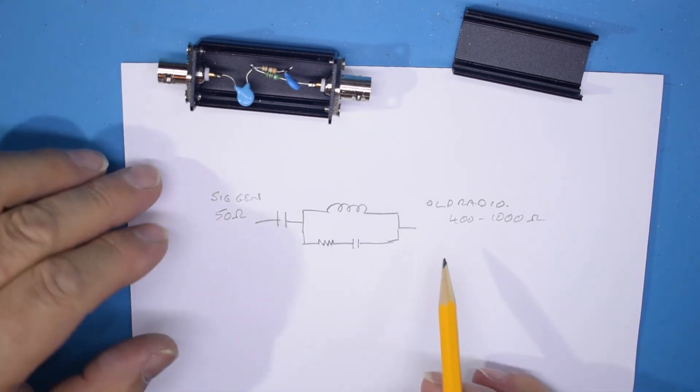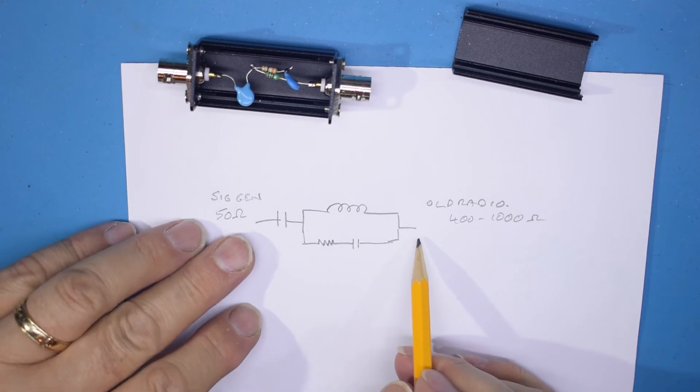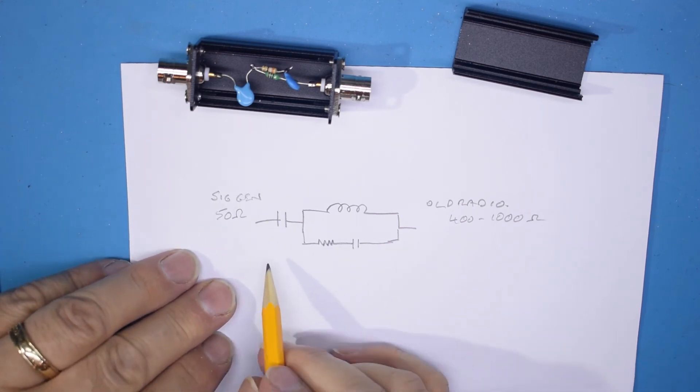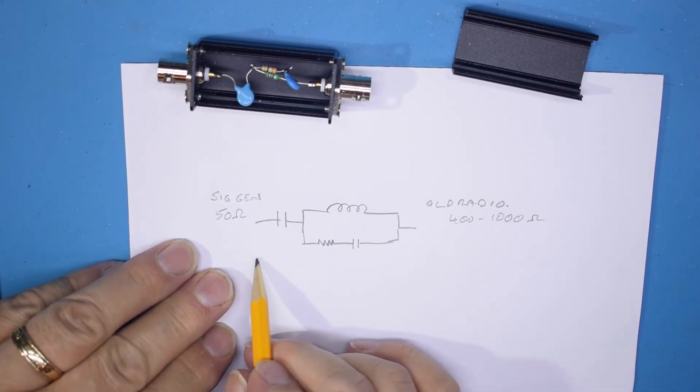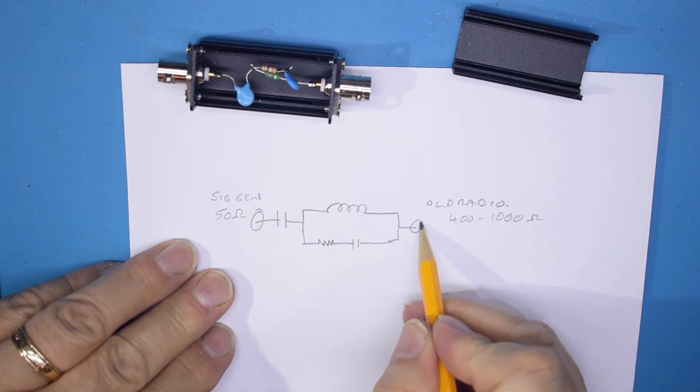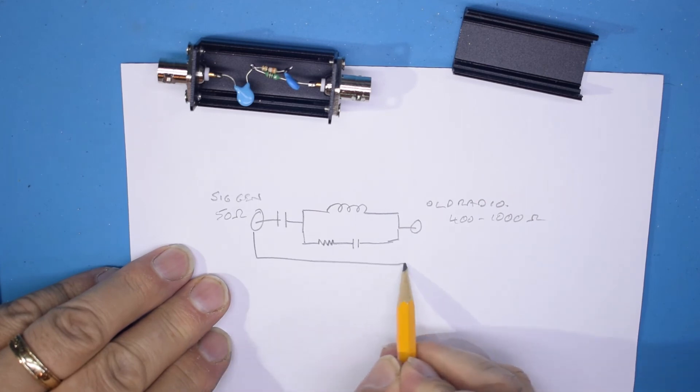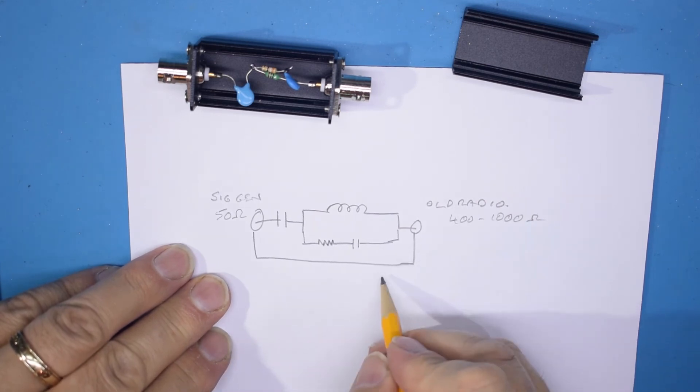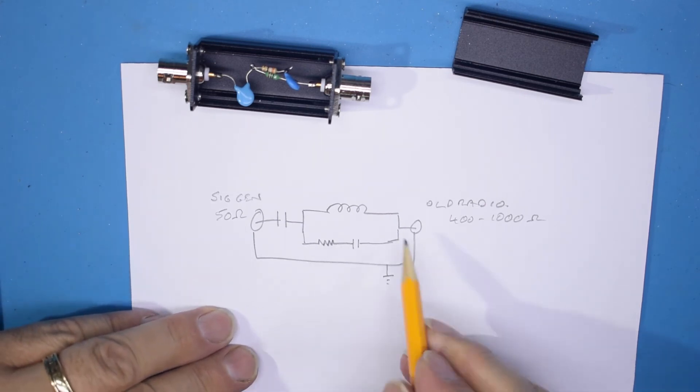Yeah, this is what it looks like. I should actually draw in the other part of it as well. If you can imagine that this is coax, like this, and these are connected together, and depending on the radio, this would be a ground connection.